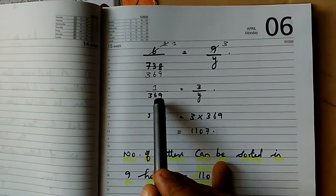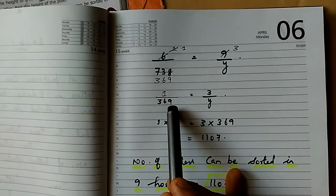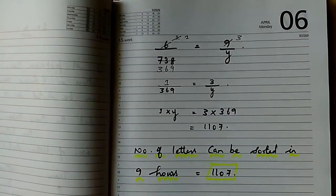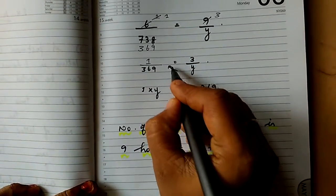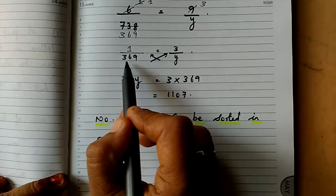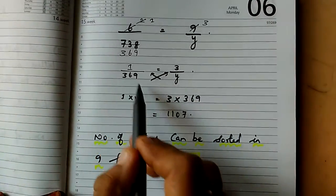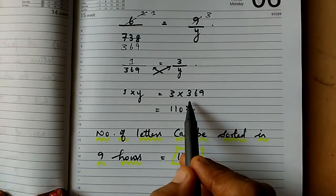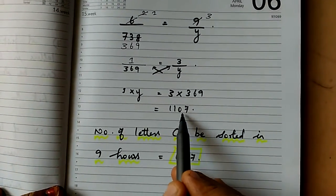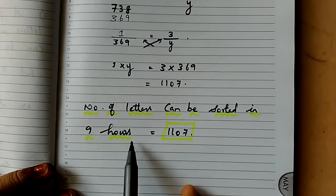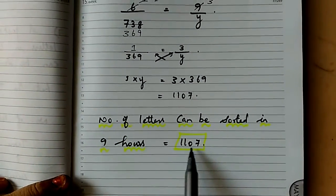Now I am going to do cross multiplication. Am I right, children? Repeating again: 1 by 369 equal to 3 by y. 1 into y equal to 3 into 369. If you multiply both terms, you get 1107. The number of letters that can be sorted in 9 hours equals 1107.